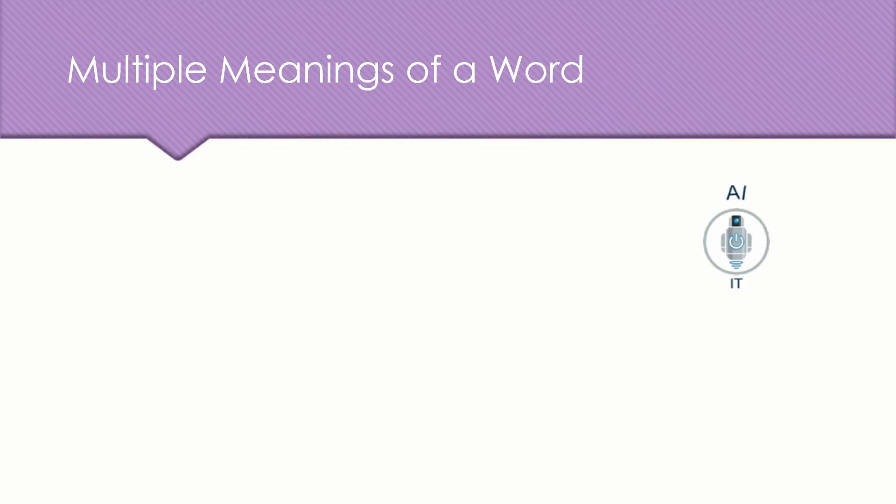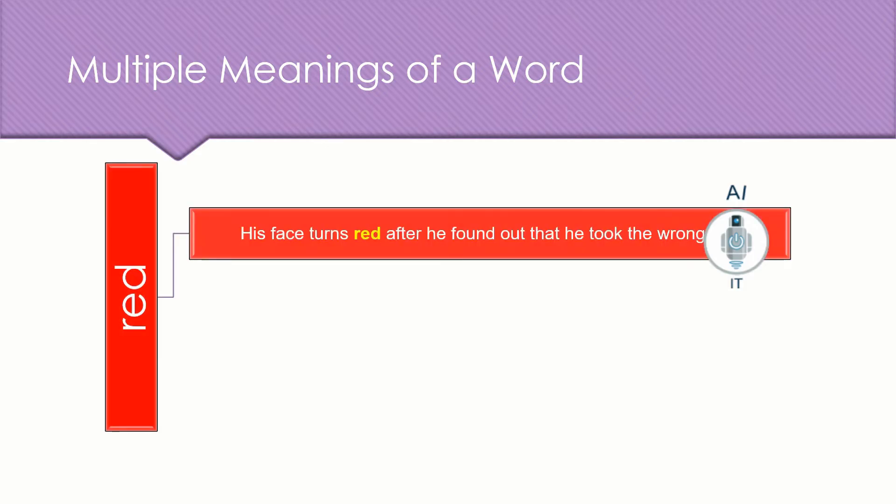Now let us look into the second one, multiple meanings of the word. If you consider the word red, it is used in different ways in the given sentences. For example, if you see this first sentence, his face turns red after he found that he took the wrong bag. If you look into this sentence, what does this mean? Is he feeling ashamed because he took another person's bag instead of his bag? Or he is feeling angry because he did not manage to steal the one that he was looking for? So the word takes different meanings here.